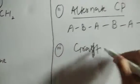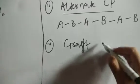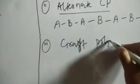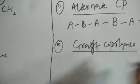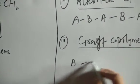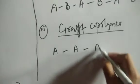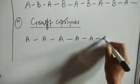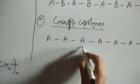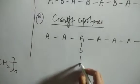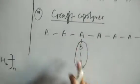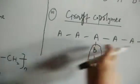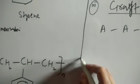The third category is called a graft copolymer. In a graft copolymer, we have one monomeric unit making the main polymeric chain — for example, all A units — and then there will be a graft somewhere of a different type of monomer, forming a branch. This branched structure is called a graft copolymer.